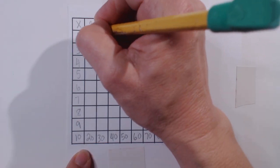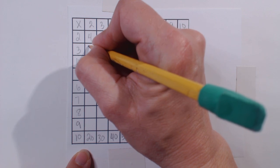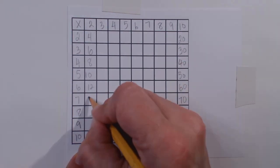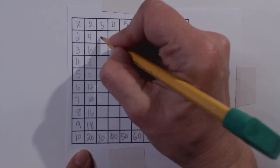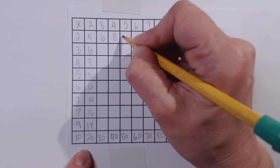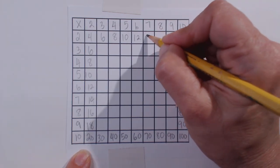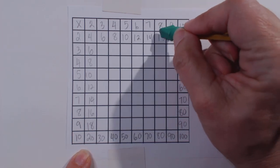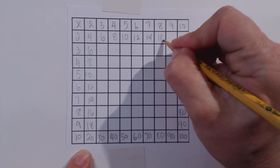We're going to do our twos. We skip counted by twos in kindergarten. We should have these pretty well by now. Down and across, always doing down and across as checkpoints. So then if I mess up, I can see it right away.